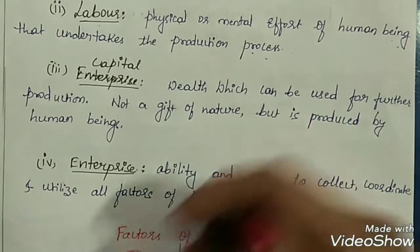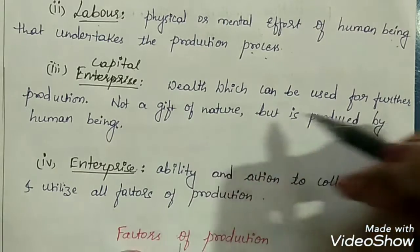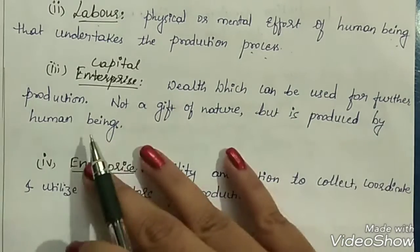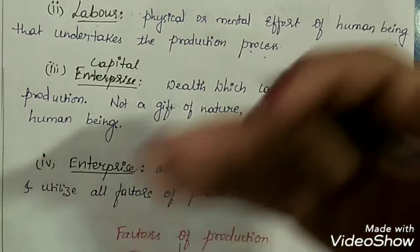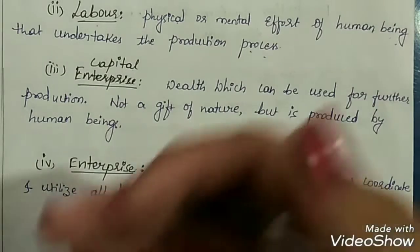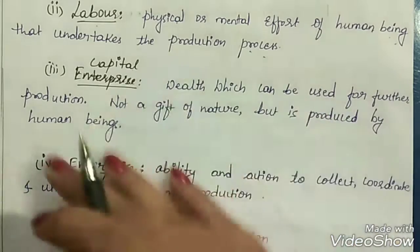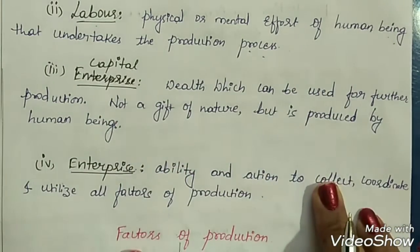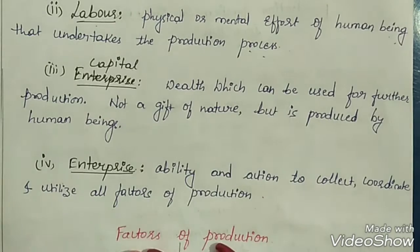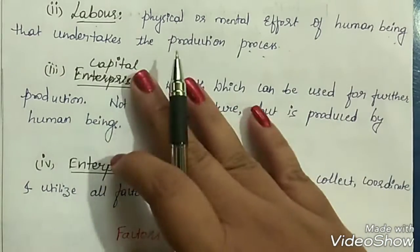Third is capital — wealth which can be used for further production, not a gift of nature but produced by human beings. Anything which is not natural and which is required for the production process is what we call capital. Capital does not only mean money; it could be buildings, machineries, or raw materials — anything man-made.